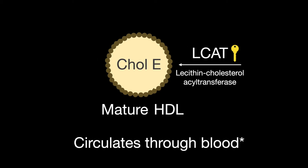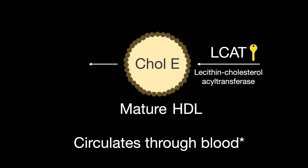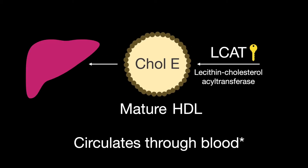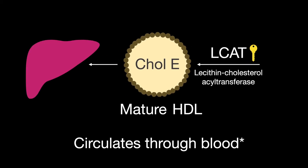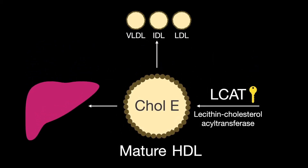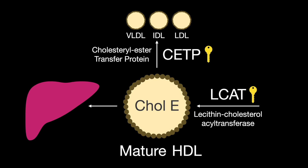The mature HDL can then transport the cholesterol to the liver. The mature HDL can also transfer the cholesterol esters to other lipoproteins — VLDLs, IDLs, and LDLs. This is accomplished by the next key enzyme in lipid transport: cholesterol ester transfer protein (CETP).